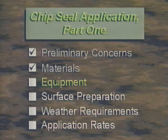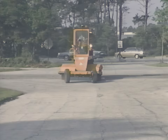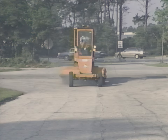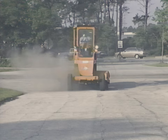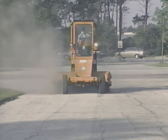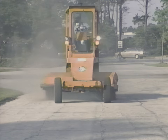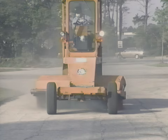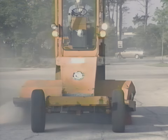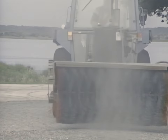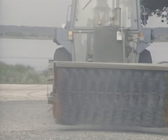Now let's go over the equipment. On chip seal projects, the first and last piece of equipment on the job is the power broom. Before chip sealing, the surface has to be cleaned to receive the oil application, so dust, sand, stones, and debris need to be swept off as thoroughly as possible. At the end of the job, the broom must sweep off any loose chips without dislodging the chips that are set in place. Damage to the fresh chip seal can result from broom bristles that are in poor condition, or from too much downward pressure by the broom.